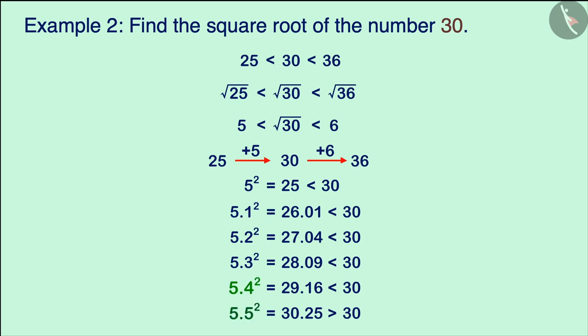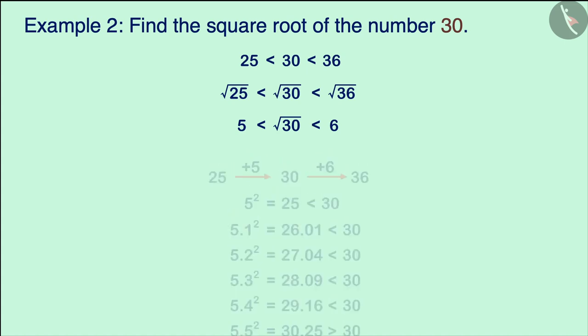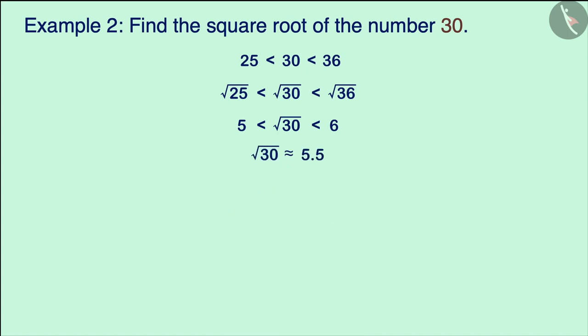Comparing the square of 5.4 and 5.5, we observe that the square of 5.5 is closest to 30. From this, we can infer that the square root of 30 will be approximately equal to 5.5.